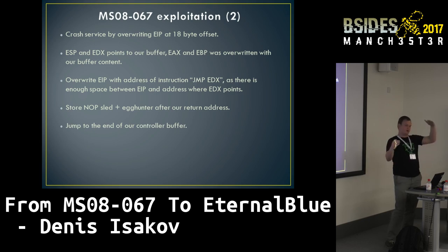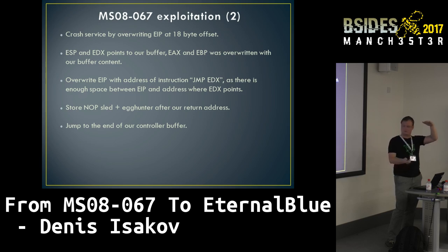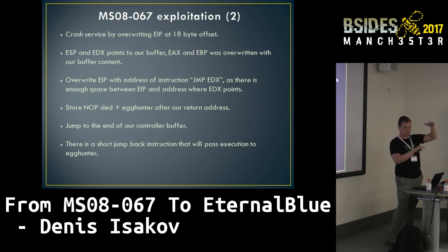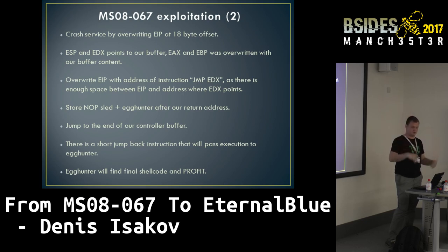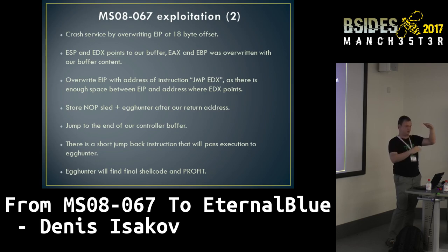So the full flow: we control EIP, jump down to our buffer via JMP EDX, then use a small jump back to the NOP sled, slide down to the egg hunter, which then finds our final shellcode somewhere else in memory and we get the payload executed. To summarize: overwrite EIP, jump down, jump back, egg hunter finds shellcode, execution. It's quite straightforward.